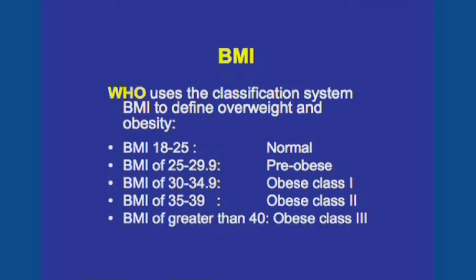If you have a BMI of 30 to 35, then you belong to obese class 1. If over 35 to 40, that is obese class 2. Any BMI over 40 is considered morbid obesity, or severe, and we call it obese class 3. Remember, the normal BMI is from 18 to 25. Anything below 18 is considered underweight. So we have underweight, normal weight, and any weight over 30 is considered obese.